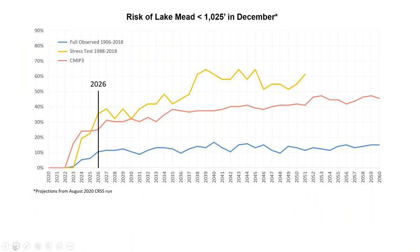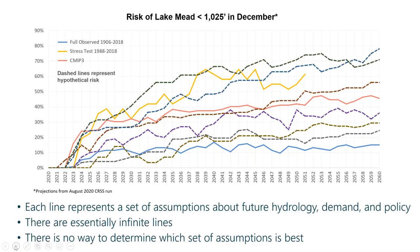This difference in risk gets even bigger when you look further out. This figure shows the same three projections out through 2060 from the August 2020 CRSS run, and each line represents assumptions about hydrology, demand, and policy going into the future. In reality, there are infinite lines capturing assumptions about these three things, and we have no way to know which is the best set of assumptions — what exactly should we be planning for in the future? Thus, we are in a deep uncertainty situation.